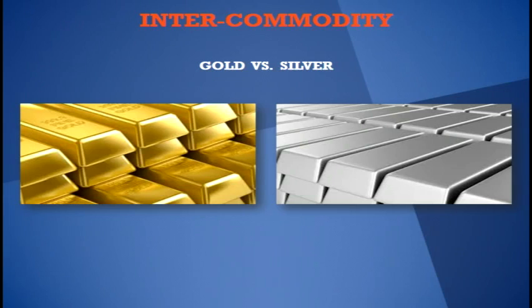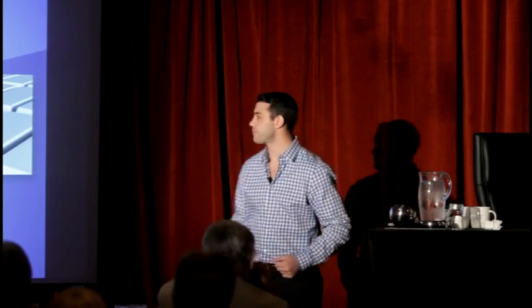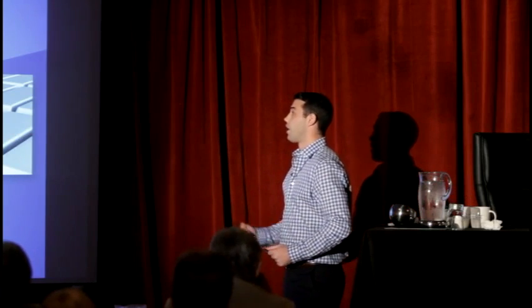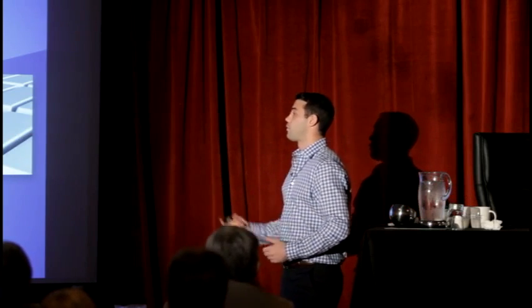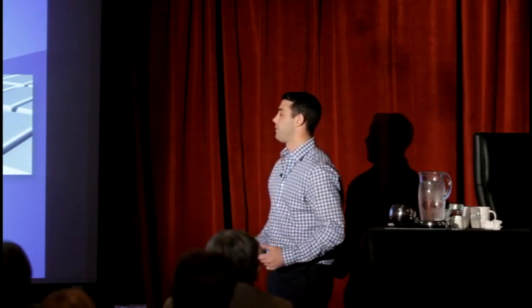Gold versus silver — these are two of the major precious metal markets, and you can trade both in your account as a spread. You're trading which one is going to outpace the other. The margin benefit is great — roughly $12,000 for this spread, as opposed to $20,000 for the two contracts on their own.